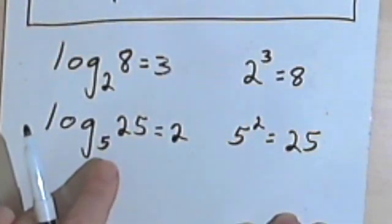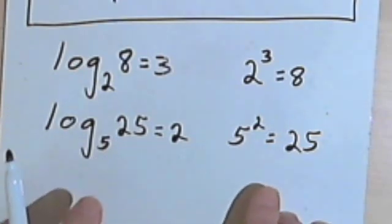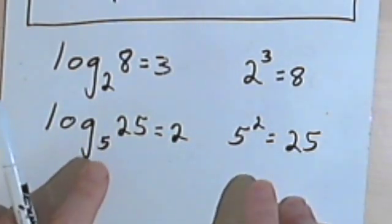Once again, I've used the same numbers, 2, 5, and 25. I've arranged them differently, but the relationship is the same between the numbers.